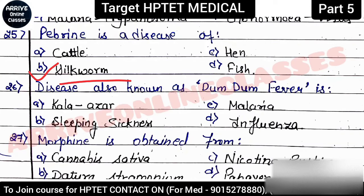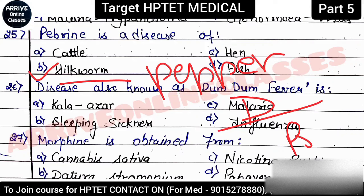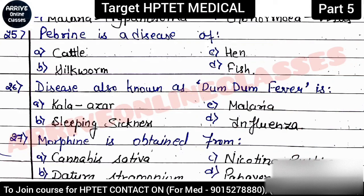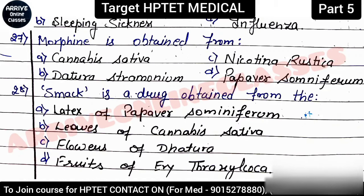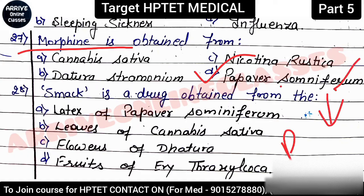There is a disease associated with silkworm — also called 'paper disease' — and it is a protozoan disease. Remember this as questions can be framed in different ways. Next: 'Disease also called dum-dum fever?' — this we already covered (kala-azar). Next: 'Morphine is obtained from?' Morphine — option D is correct — is obtained from Papaver somniferum, commonly called the poppy plant.